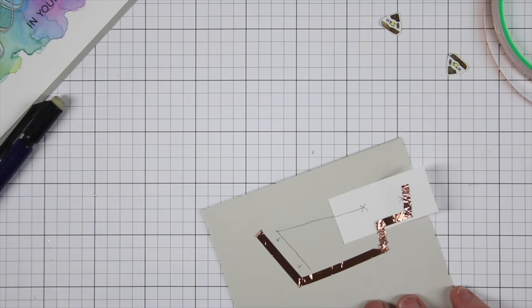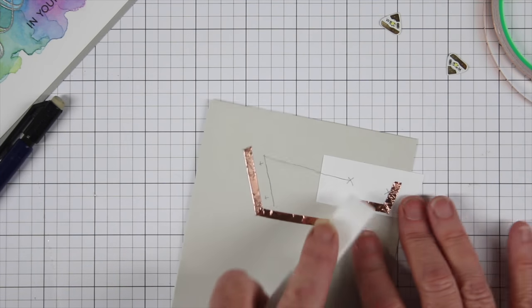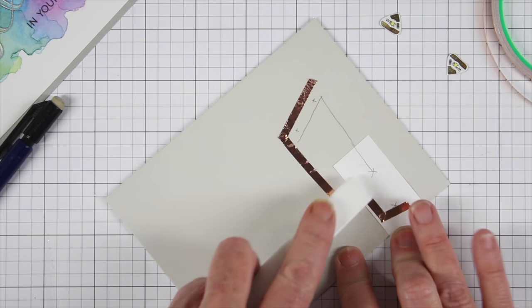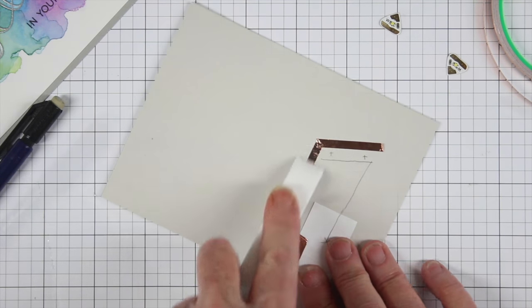Now that I have all this put down I'm going to grab my bone folder and I can just press this around and it smooths out that copper tape really nicely.